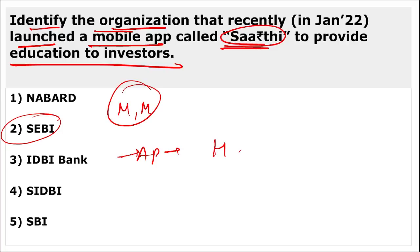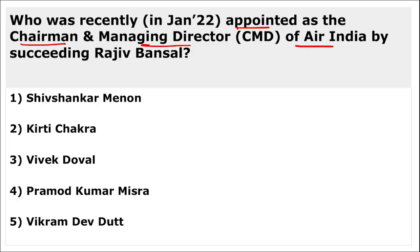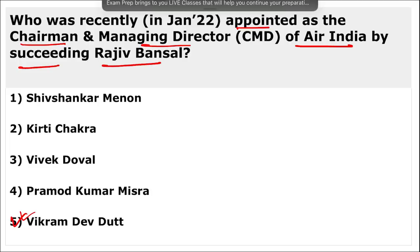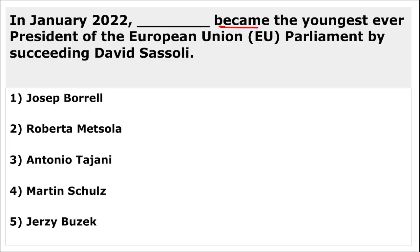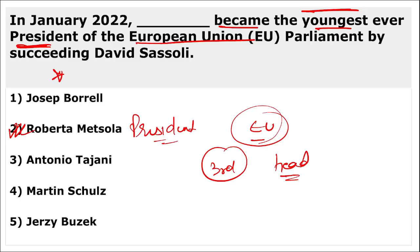Vikram Dev Dutt was appointed as the Chairman and Managing Director of Air India, succeeding Rajiv Bansal. Roberta Metsola became the youngest ever President of the European Union and the third woman to head the European Union — she is from Malta.